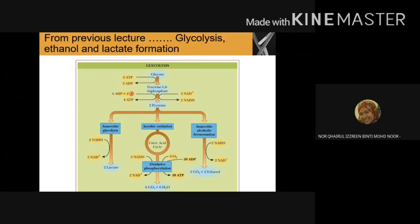With a single glucose molecule producing two pyruvate molecules, we not only produce ATP but also collect four electrons via NAD+, producing NADH. Glucose is oxidized to pyruvate, which will enter the mitochondria and undergo decarboxylation to form acetyl-CoA. In this process, it releases carbon dioxide and two electrons. This acetyl-CoA then donates a portion of its structure to the TCA cycle.